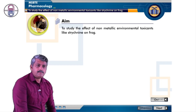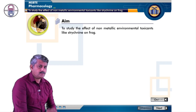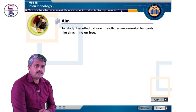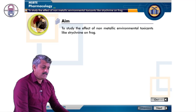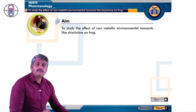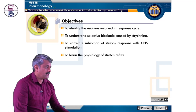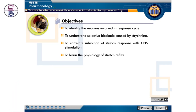The objectives of this experiment are: to identify the neurons involved in the response cycle; to understand the selective blockade caused by strychnine; to correlate inhibition of stretch response with CNS stimulation; and to learn the physiology of stretch reflex.